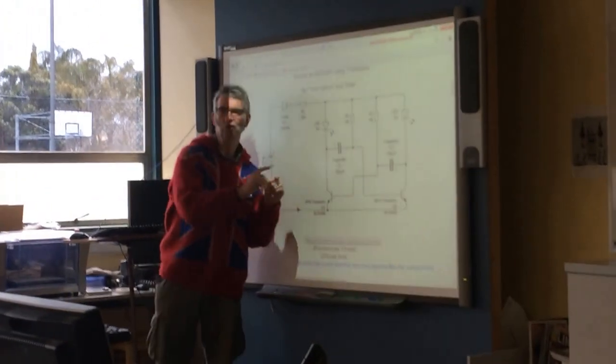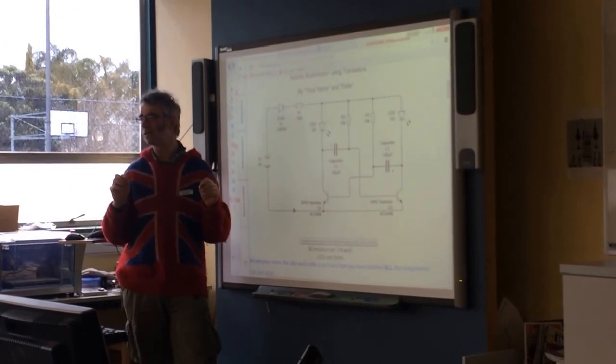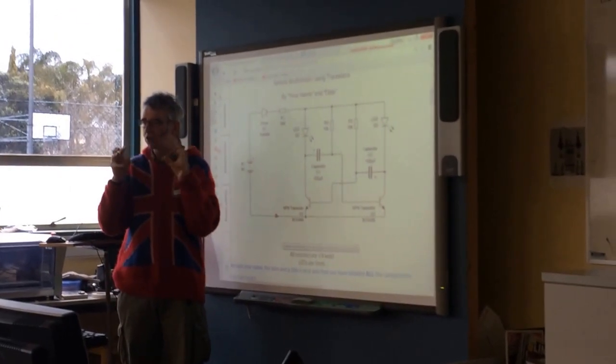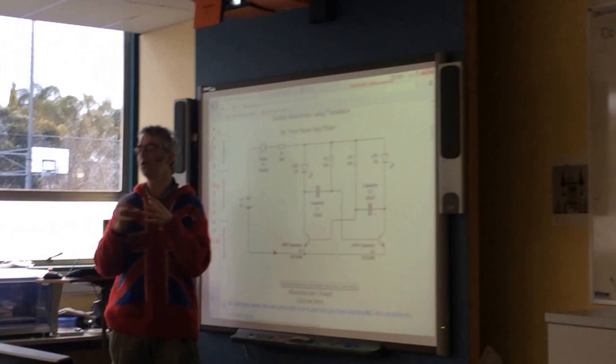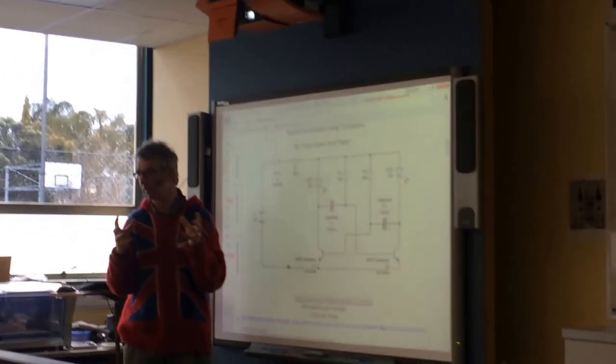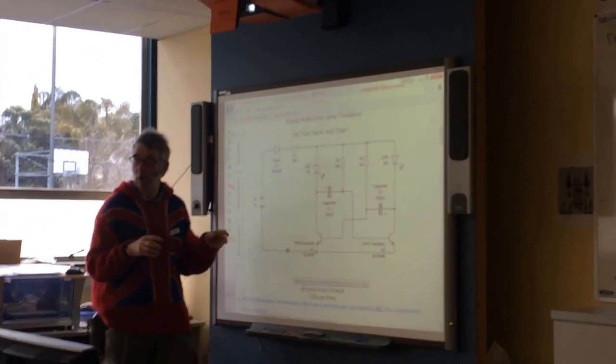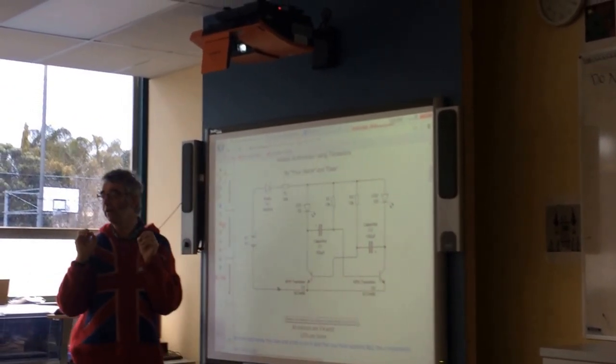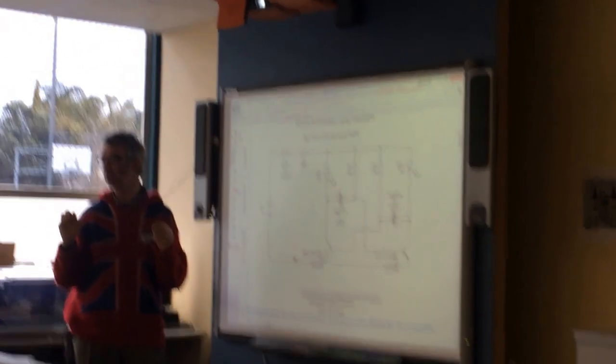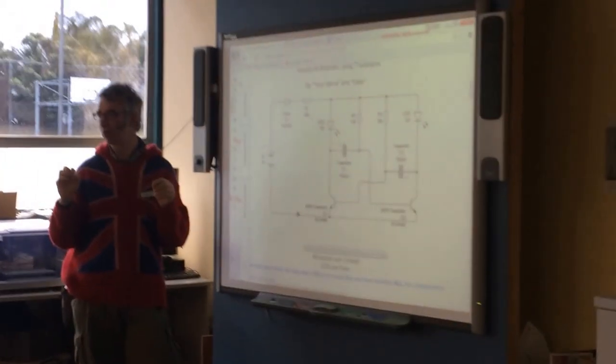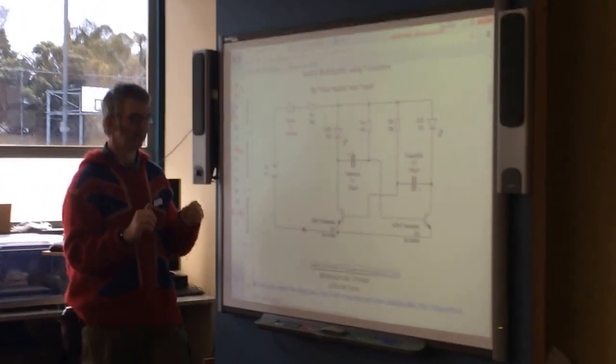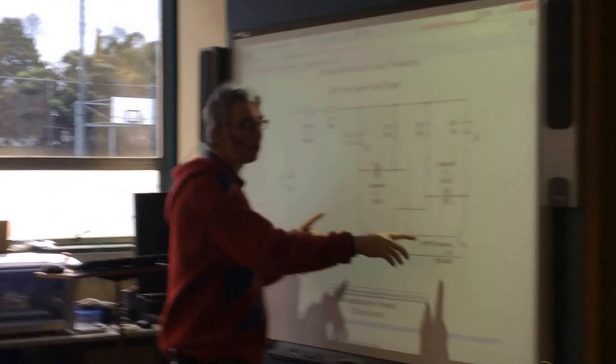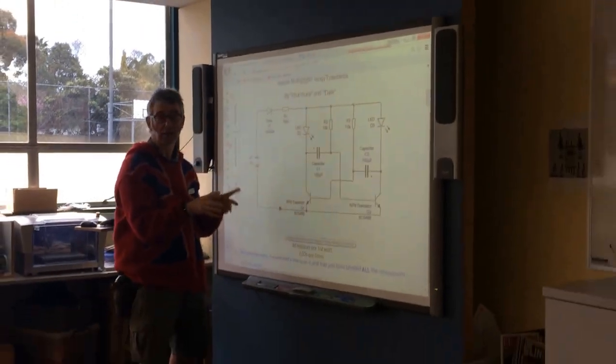So even though these two transistors will be identical, if you went down to the atomic level, there would be a few million atoms different, or possibly a few hundred, I don't know. And basically what that means is that one of them will be very slightly faster than the other one. So one of them will switch on first, and the other one won't.